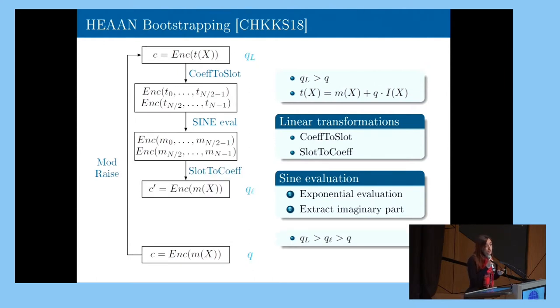And then we will finish by coming back to the coefficient representation. So the idea is that if we choose the parameters in a proper way, the arriving level Q_L will be larger than the original q. So this will allow us to have more levels left to perform proper homomorphic computations.